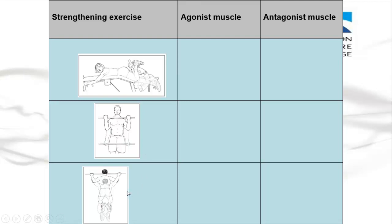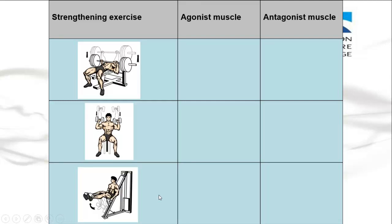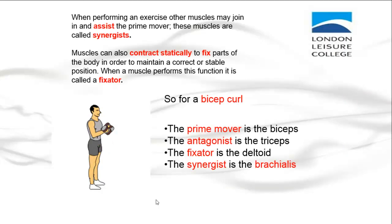This one will be tricky — a wide grip chin-up. This one's a bench press, this is a shoulder press, and this is a thigh extension. Go through those pictures and work out which is going to be the agonist and antagonist. Pause this video and give this activity a go.